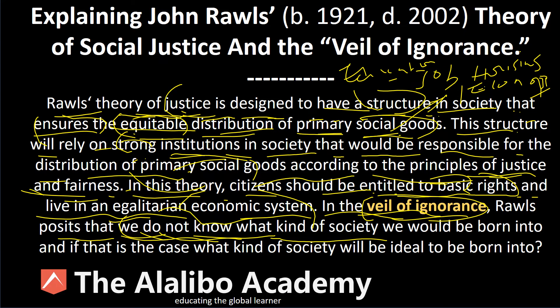We have no idea where we're going to be born — it could be Baltimore, Caracas, Rio de Janeiro, or Lagos, Nigeria. Given this uncertainty, Rawls asks a very important question: what kind of society would be ideal for us to be born into? Since we don't know where we're going to be born, these strong institutions are designed to address the inequalities in society by ensuring that all citizens have equal basic access to resources, distributed in a fair and equitable manner.